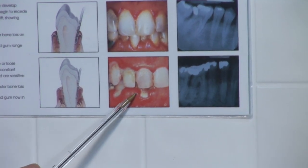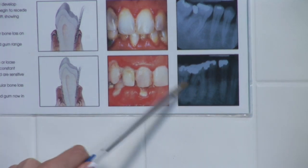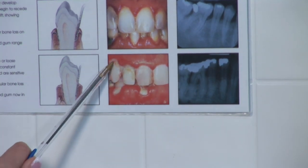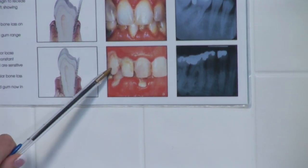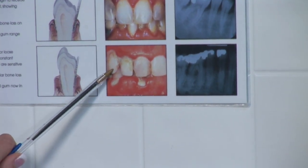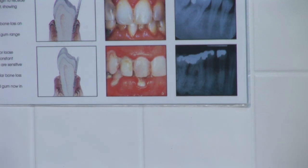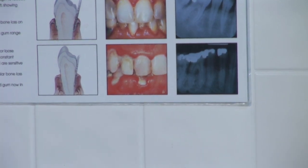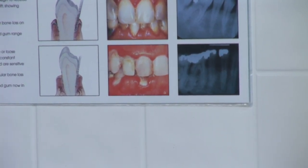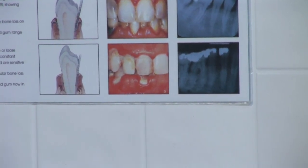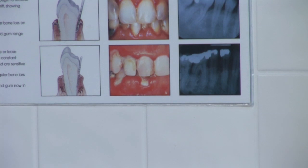The roots of your teeth may be exposed when you have advanced periodontitis. This will cause sensitivity to hot and cold temperatures — that's another symptom to look out for.